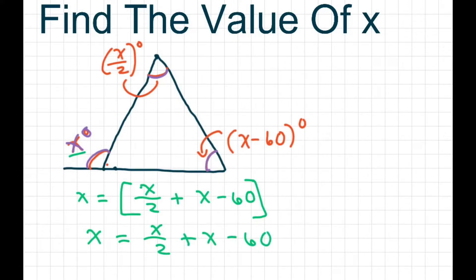And what happens is when you subtract x from both sides those cancel. So what I'm going to do is just add 60 to both sides.